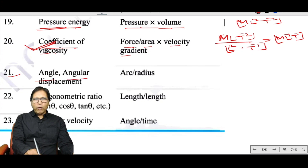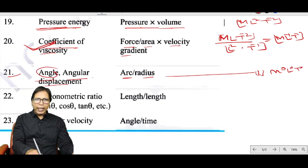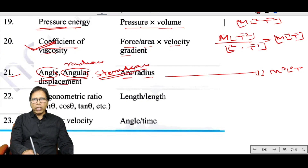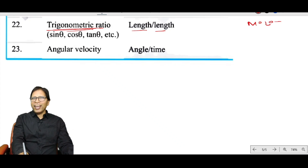Angle and angular displacement equal arc divided by radius (L/L), so they are dimensionless but have the unit radian. Solid angle is also dimensionless, with unit steradian. Trigonometric ratios (length/length) are also dimensionless: M⁰N⁰T⁰.